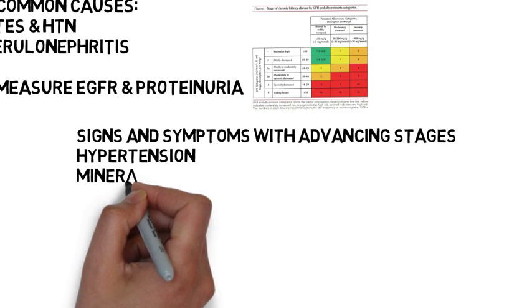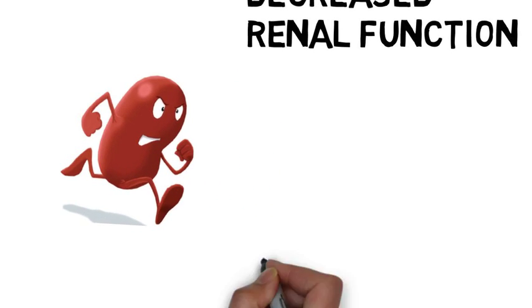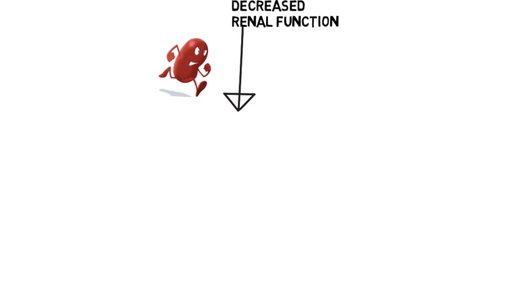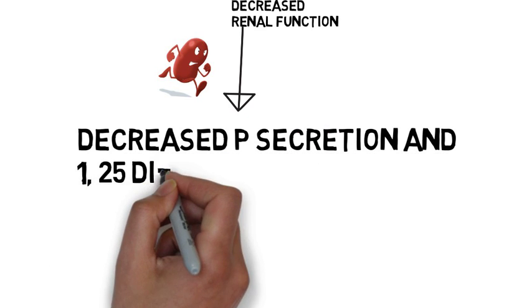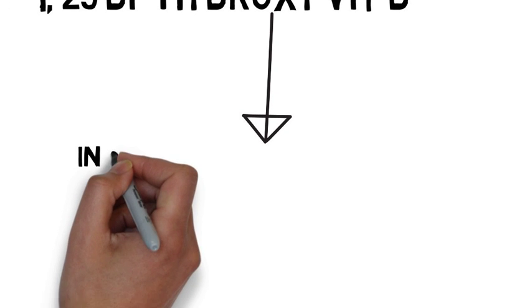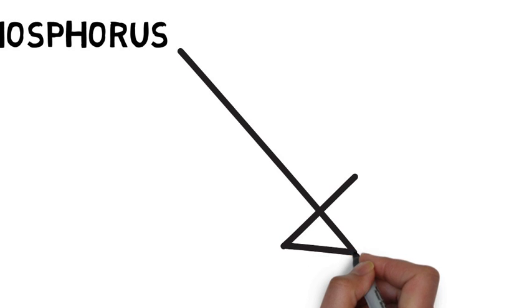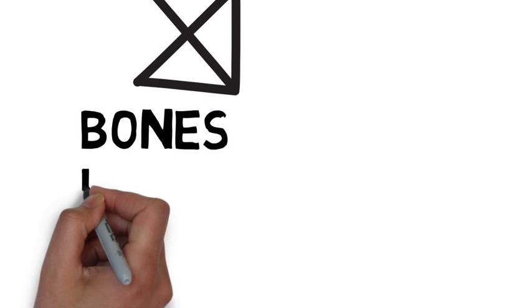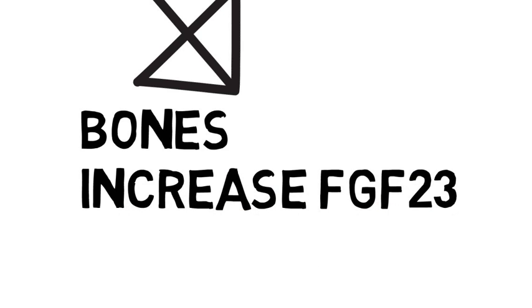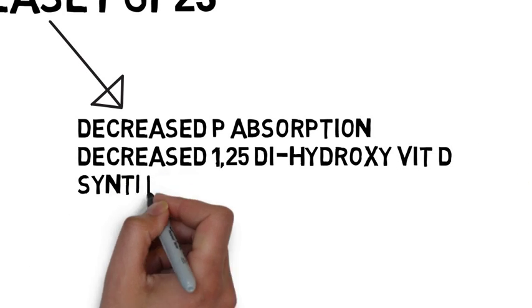Signs and symptoms with advancing stages of kidney disease can include hypertension and mineral and bone disease. This begins with a decrease in kidney function, leading to decreased phosphorus secretion and decreased production of 1,25-dihydroxyvitamin D by the kidney. This subsequently leads to an increase in serum phosphorus, which stimulates complications — particularly in the bones — including increased production of FGF23, a hormone meant to decrease serum phosphorus when it rises. FGF23 decreases phosphorus absorption and also decreases 1,25-dihydroxyvitamin D synthesis.